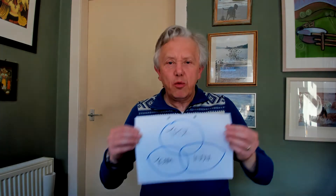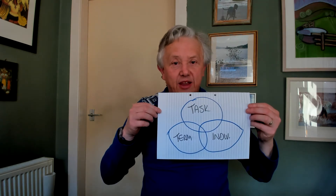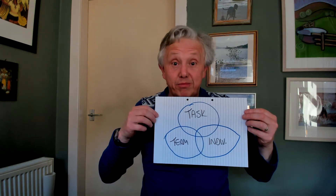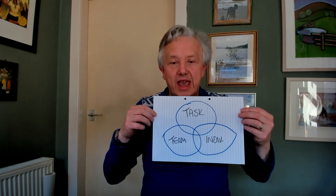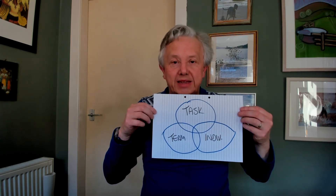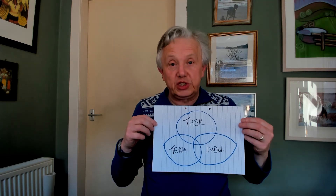So there you have it — John Adair's action-centred leadership concerns itself with team, task and individual. Now let's think about how this plays out in the workplace. What we've got here is a Venn diagram — that's meant to be three equal stages. What we're thinking about here is making sure that we balance out task, team and individual as much as possible.